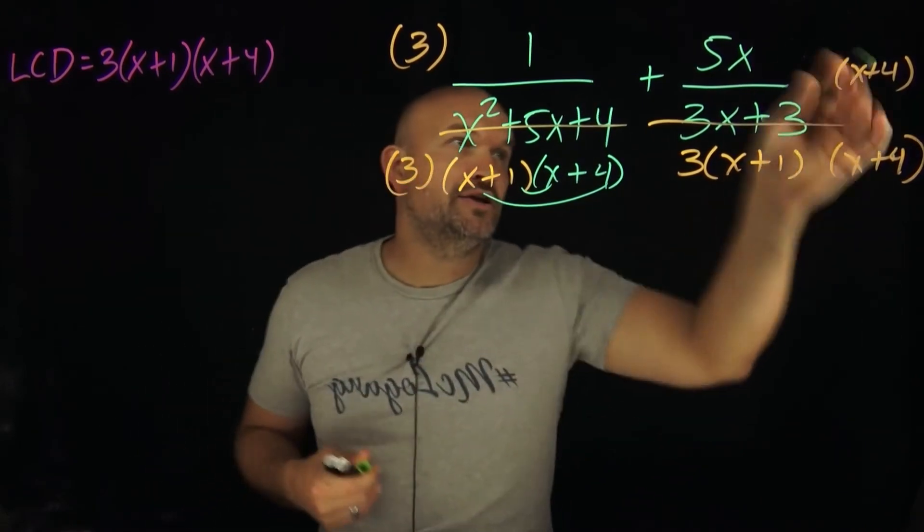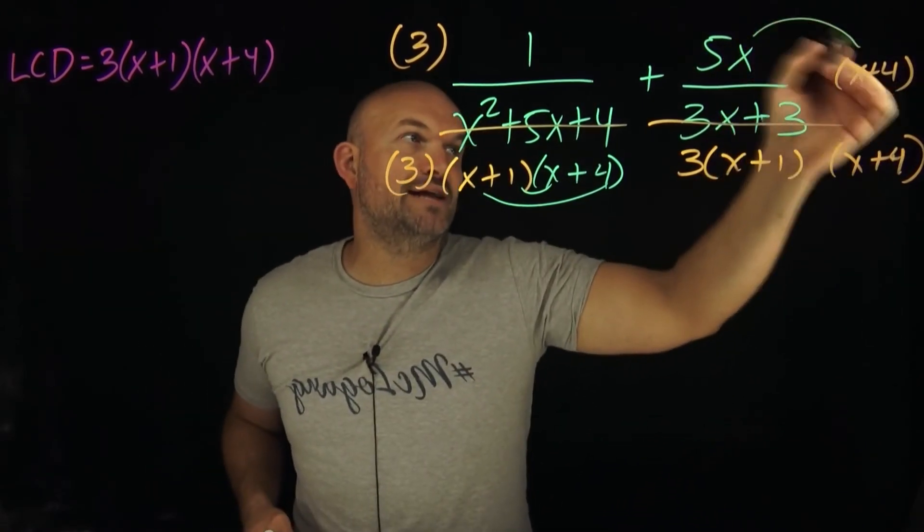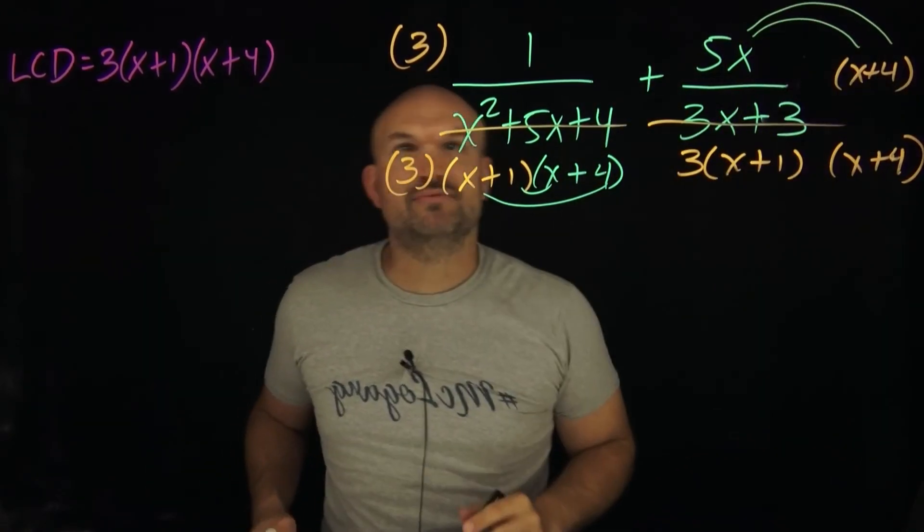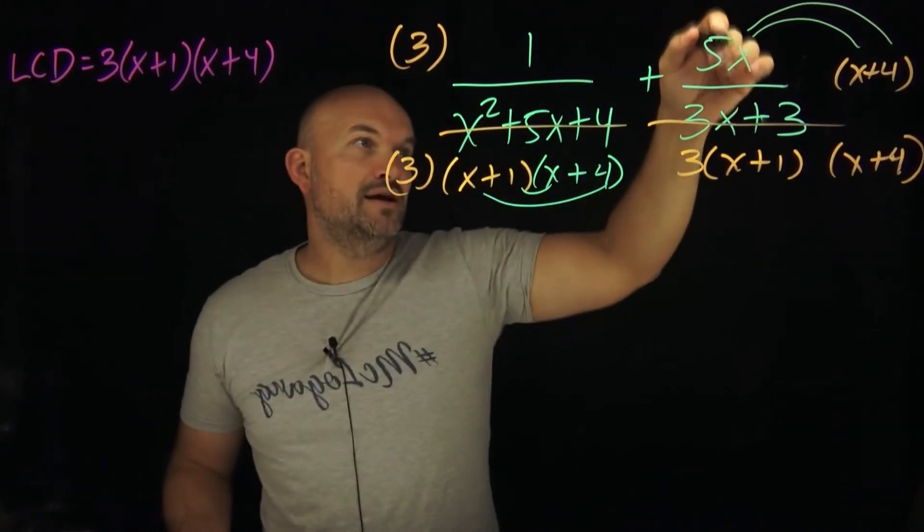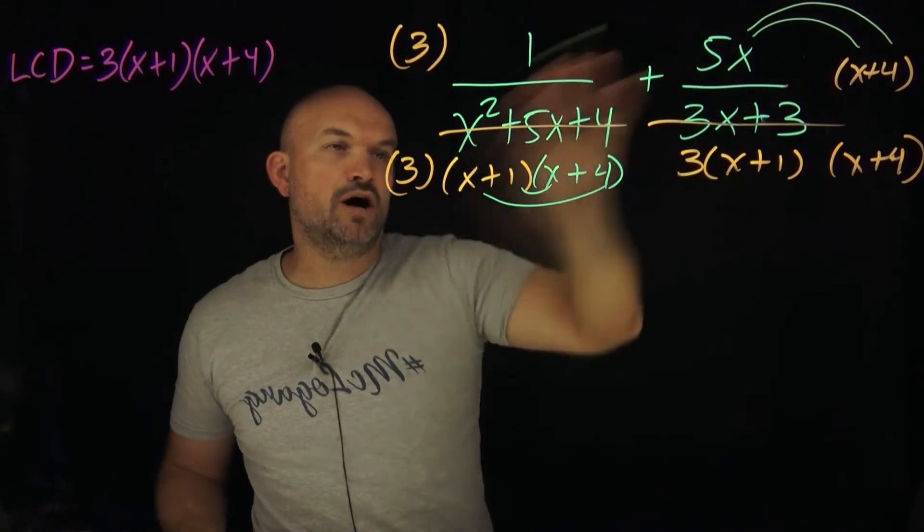I can also do an extra step over here. Notice I'm multiplying this. I can just apply the distributive property here and then simplify it. Let's rewrite this. I'm going to have 3 + 5x times x, 5x plus 4, all over my LCD.